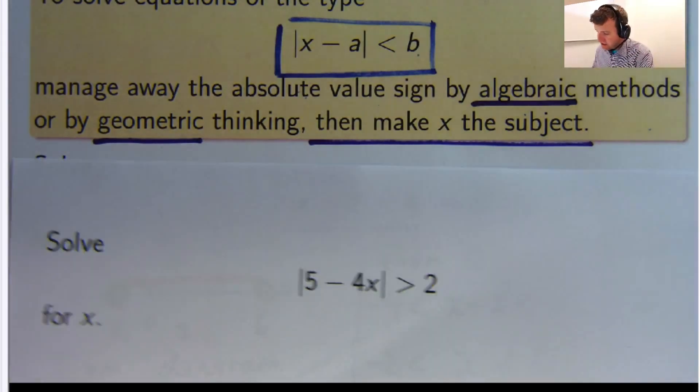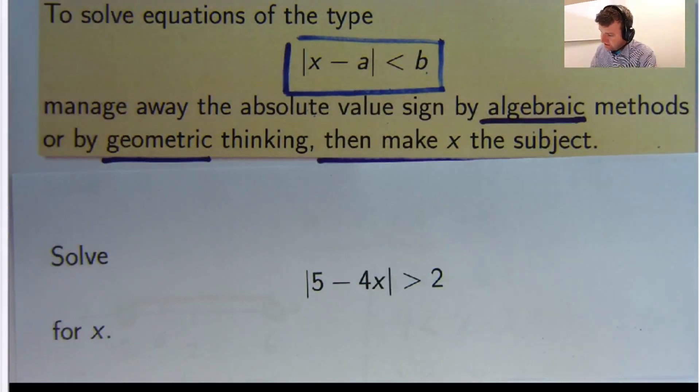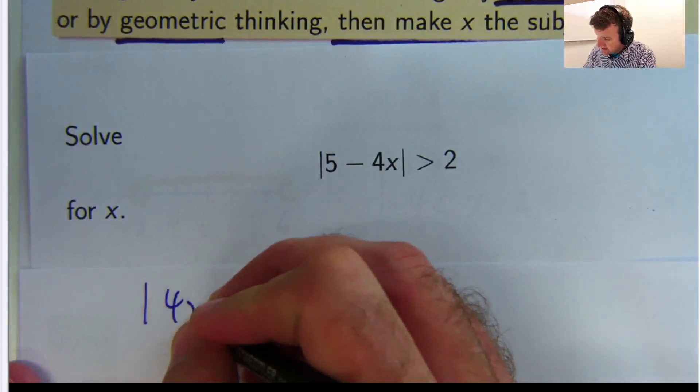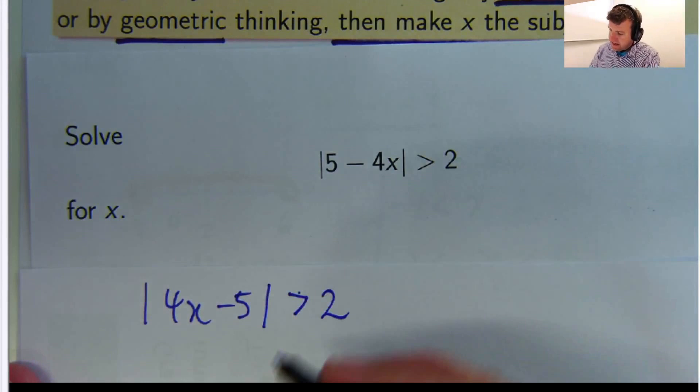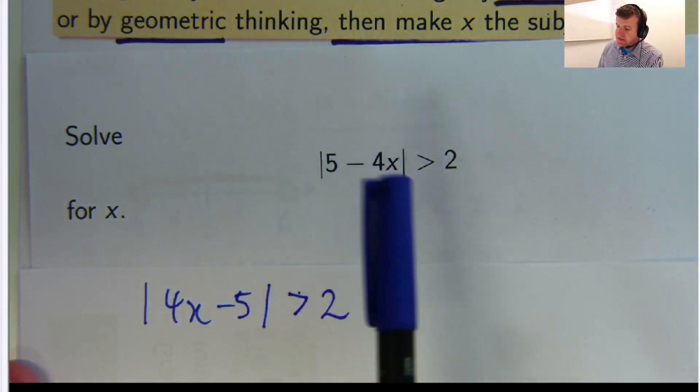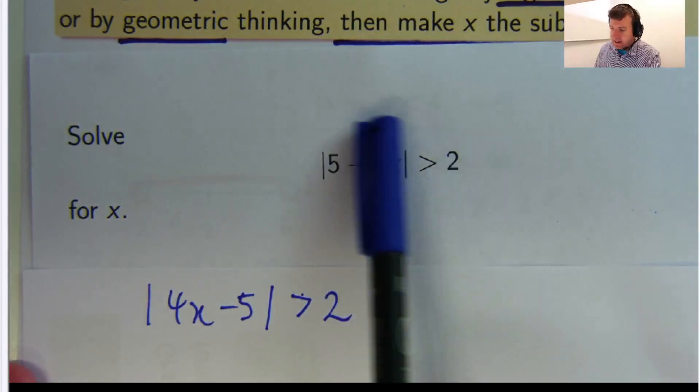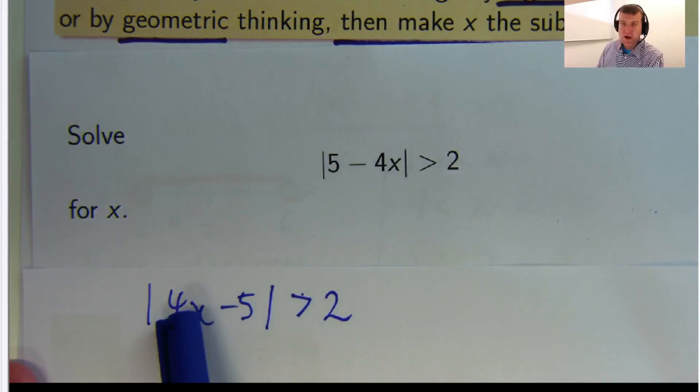I can do it this way. Let me just bring in another sheet of paper here. Firstly, I can write this as 4x minus 5 is greater than 2. And because the distance from 5 to 4x is the same as the distance from 4x to 5.